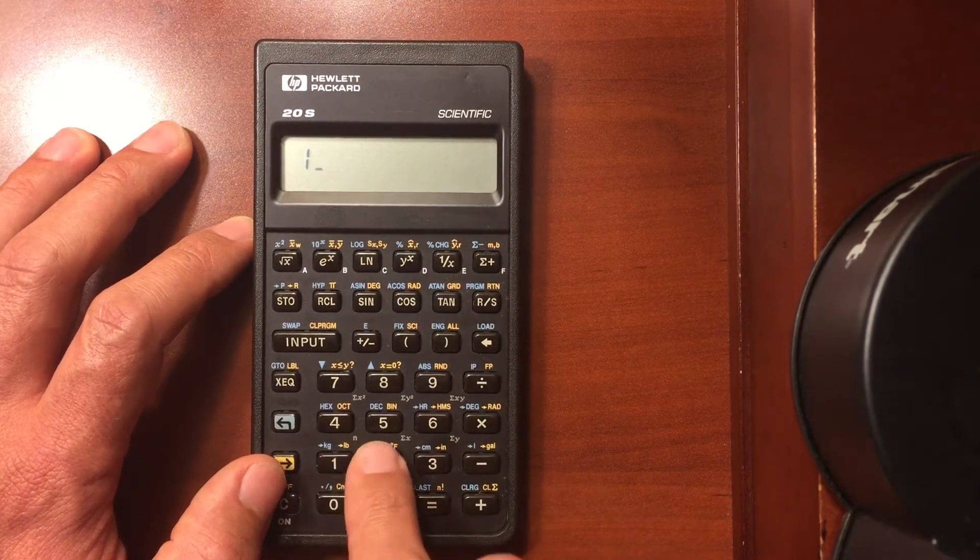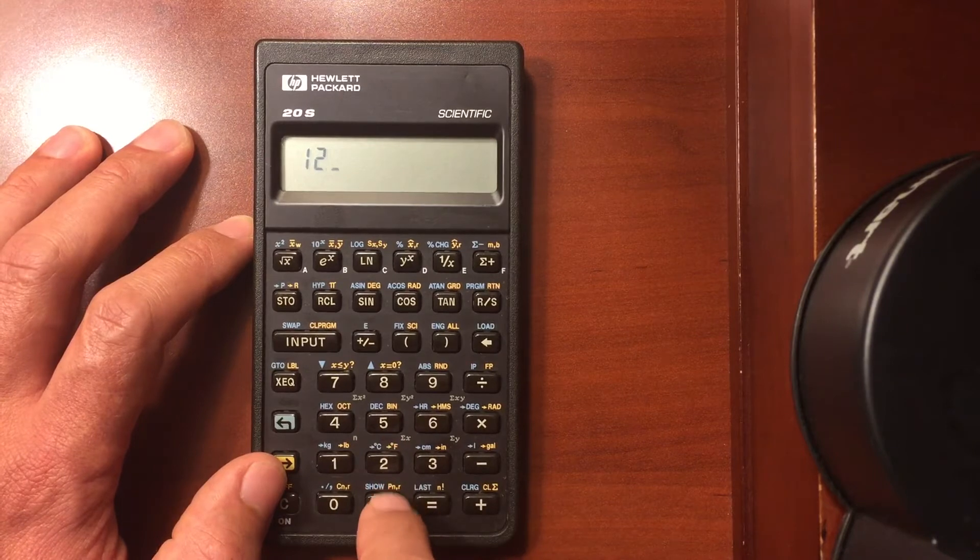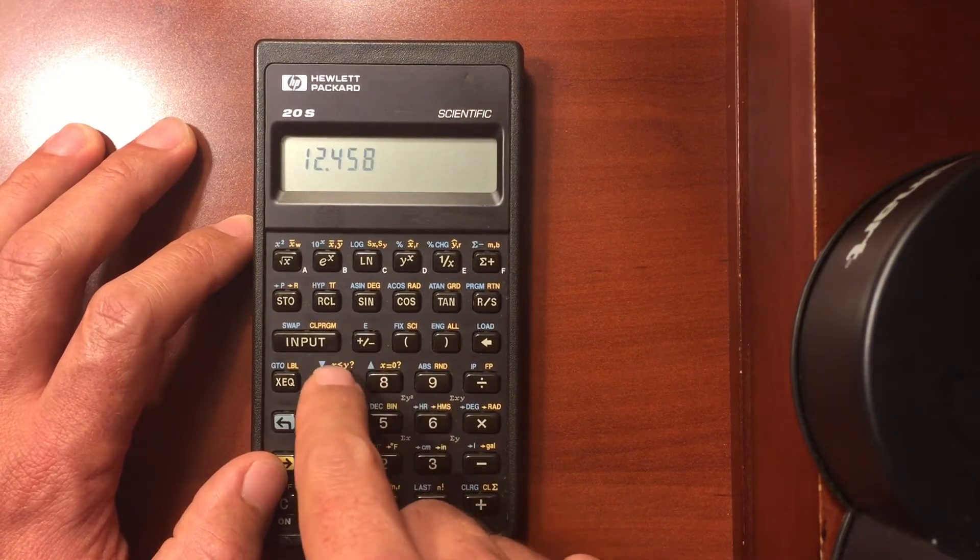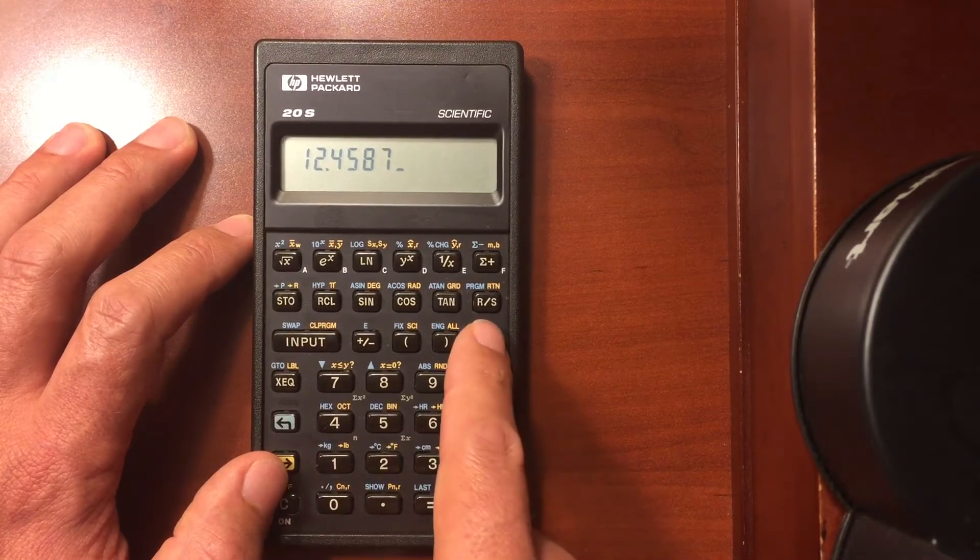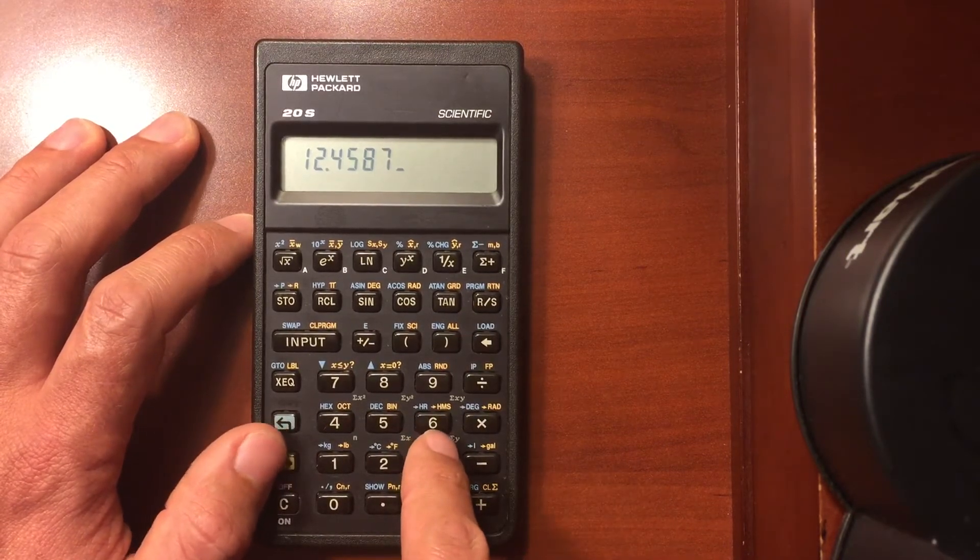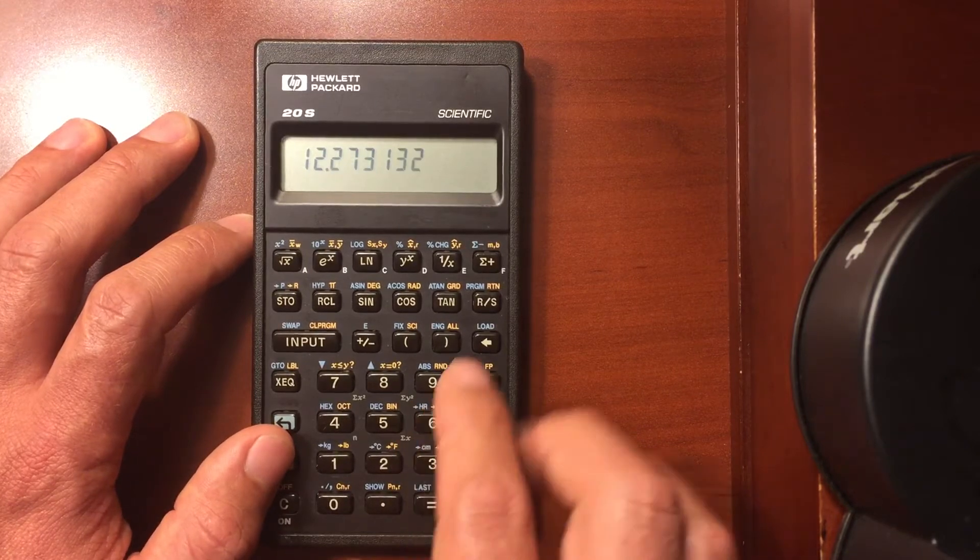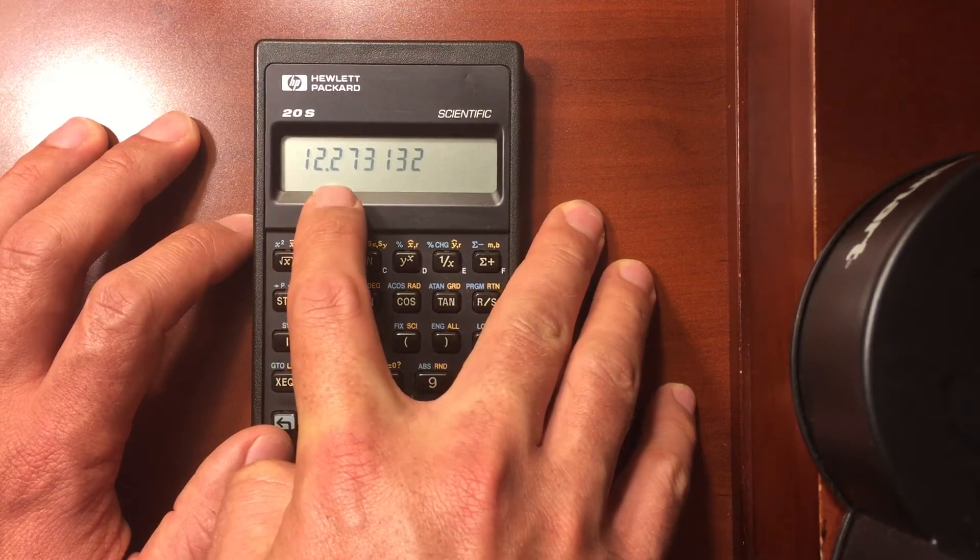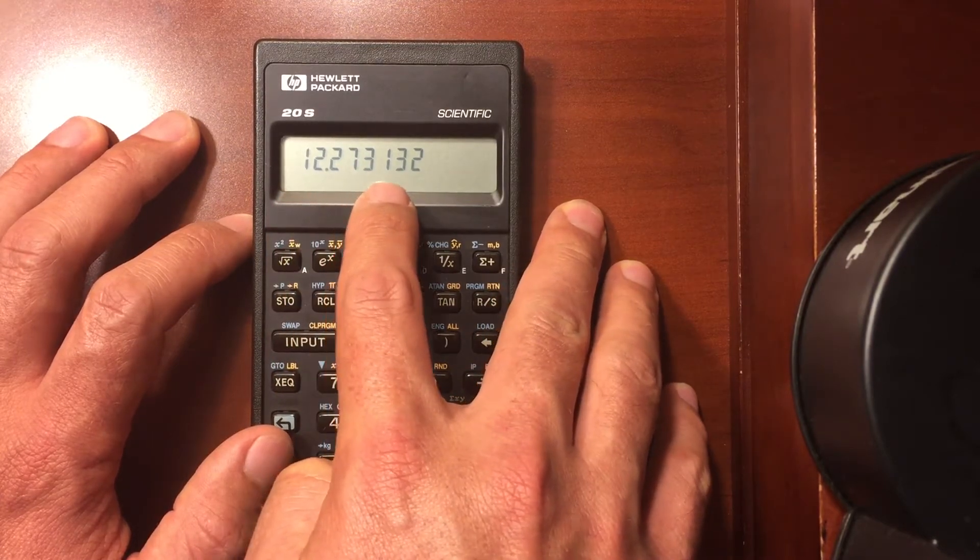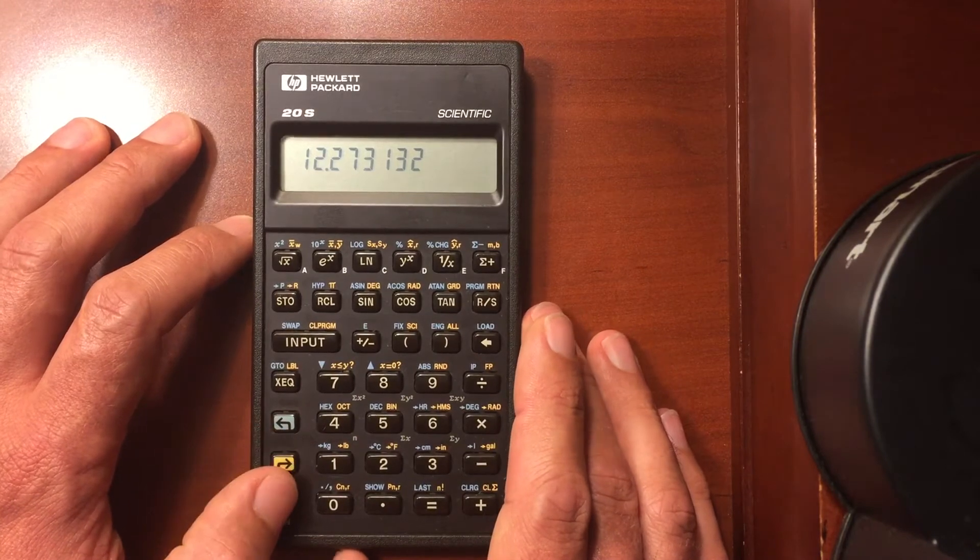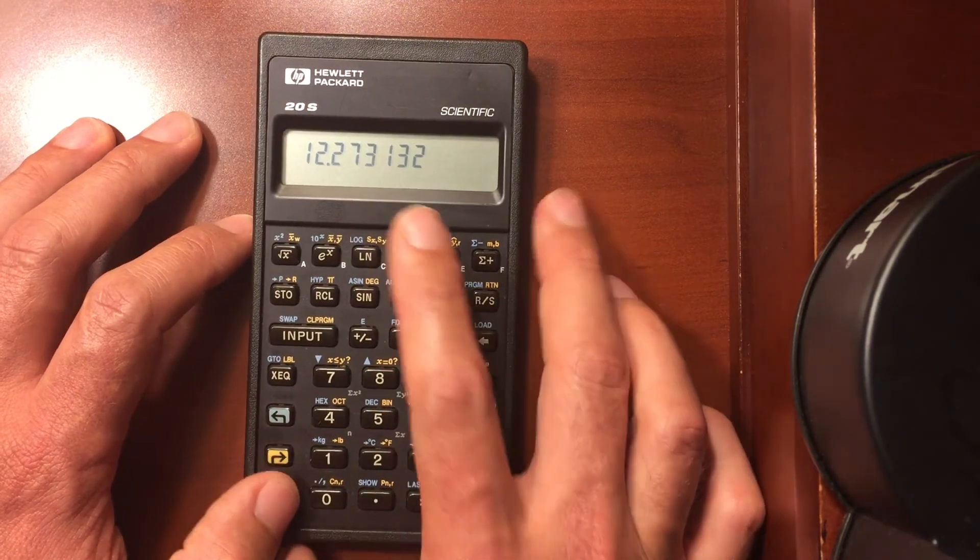To go back, I could do 12.4587 hours and convert that to hours, minutes, seconds. And that gives me how you would read this as 12 hours, 27 minutes, 31 seconds, and 32 hundredths of a second. So 31.32 seconds.